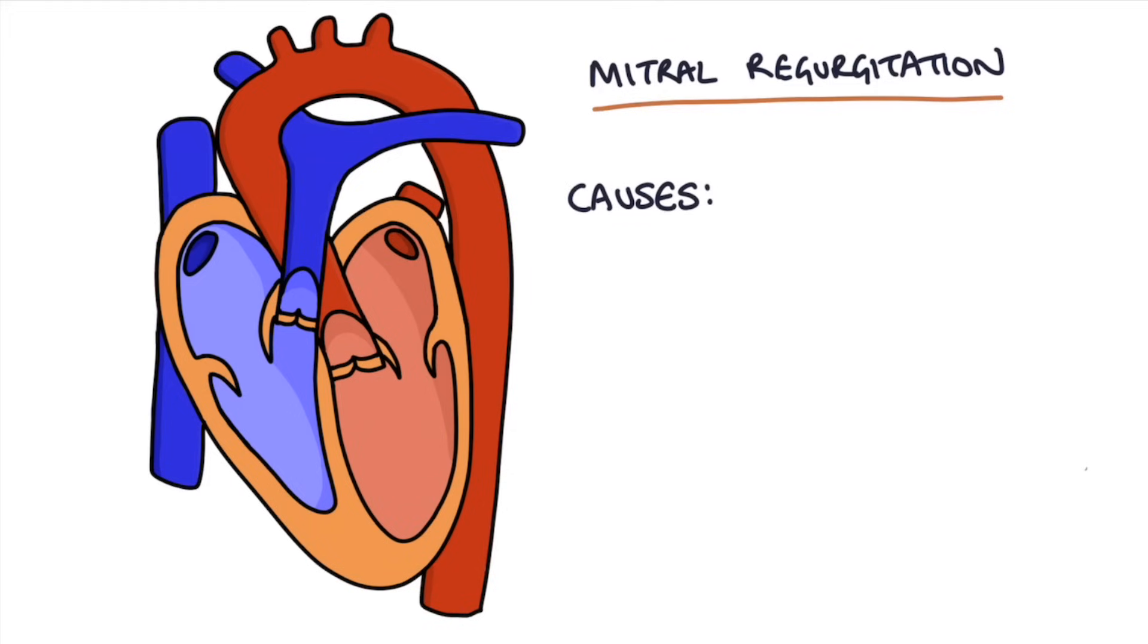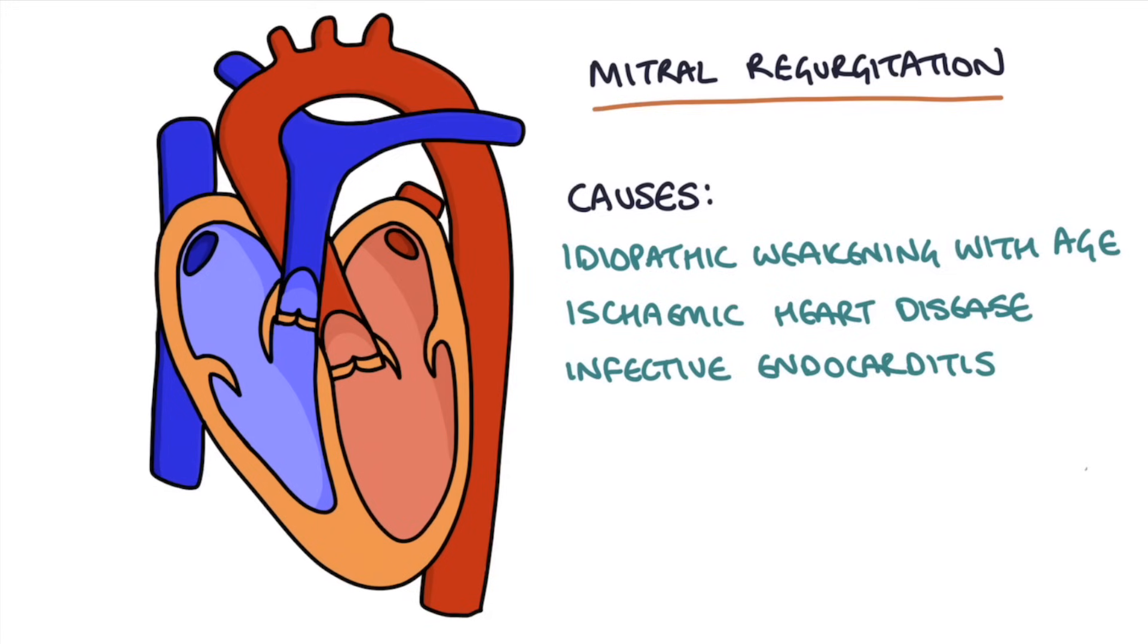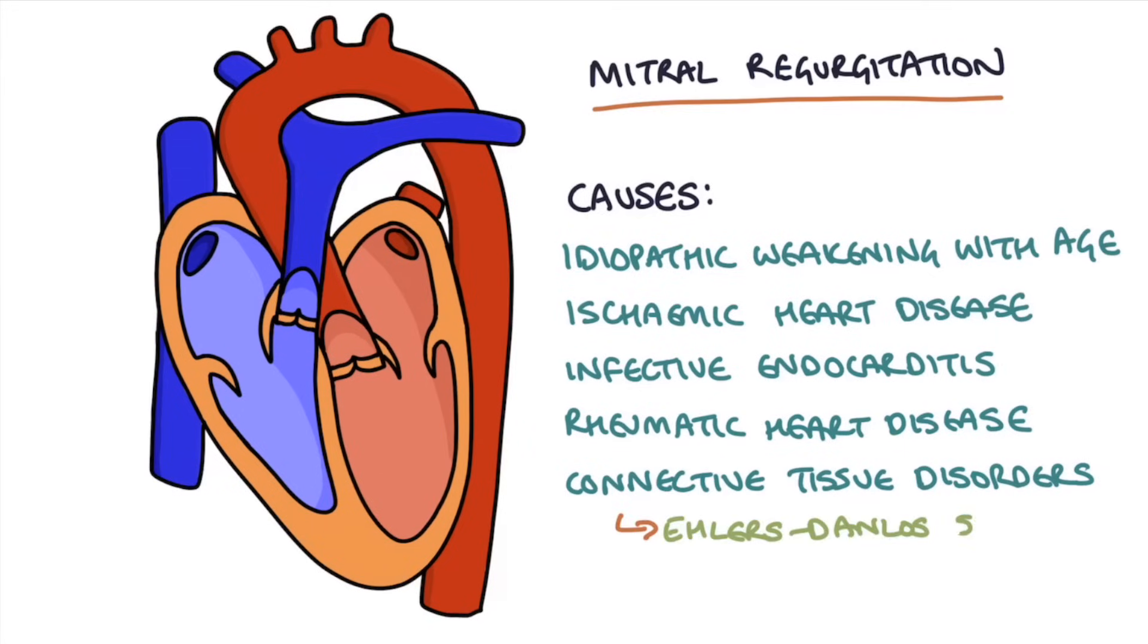So what causes mitral regurgitation? Well the most common cause is idiopathic weakening of the valve with age. So as the patient ages their valve just naturally gets a bit weaker. It can also be associated with ischemic heart disease, infective endocarditis, rheumatic heart disease, or connective tissue disorders such as Ehlers-Danlos syndrome or Marfan syndrome.